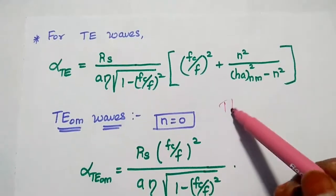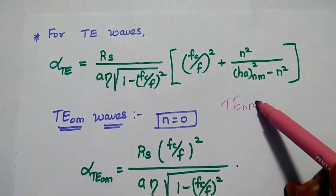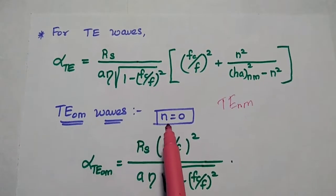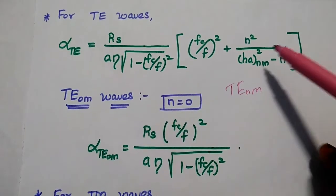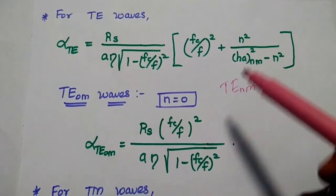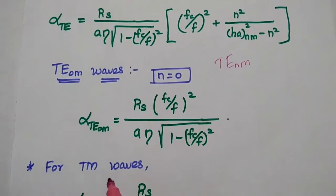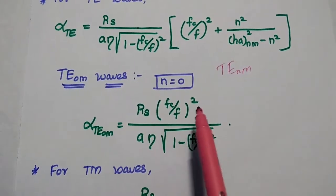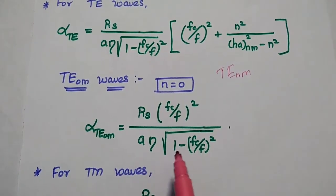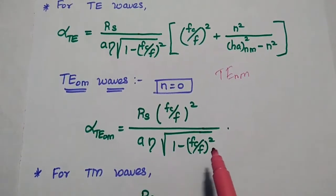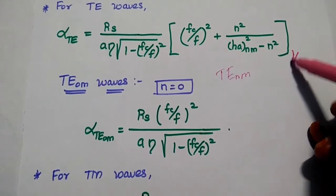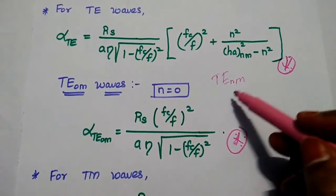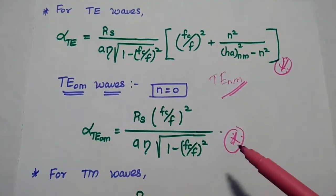Here H'_NM is the mode value N into M. For TE0M waves, N equals 0, so the N-dependent term becomes zero. Then we get alpha_TE0M equals RS times (fc/f)^2 divided by (A times eta times square root of (1 minus (fc/f)^2)). These two are the attenuation factor values for TE waves — this one is for TE_NM waves and this one is for TE_0M waves.